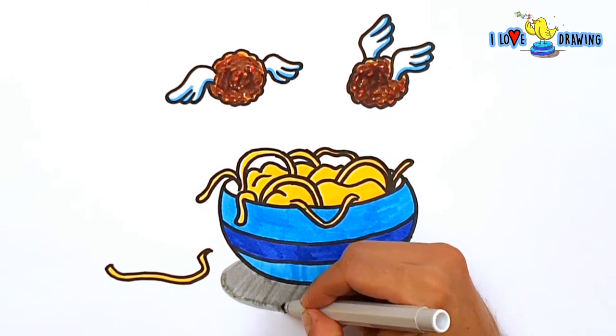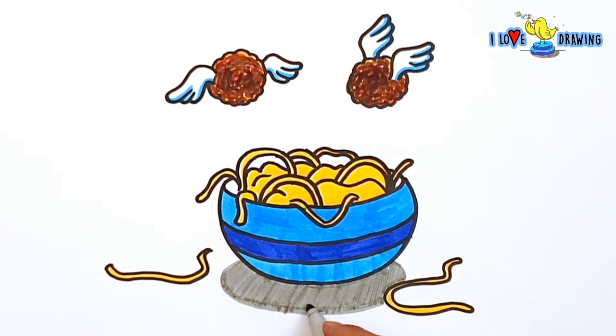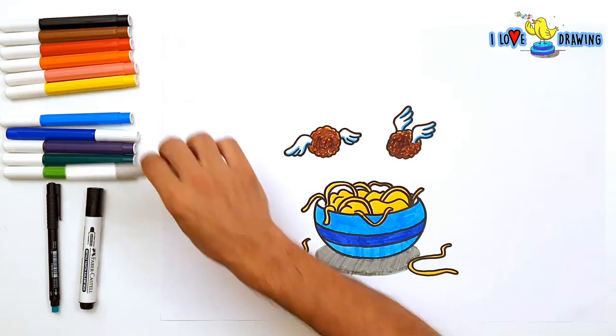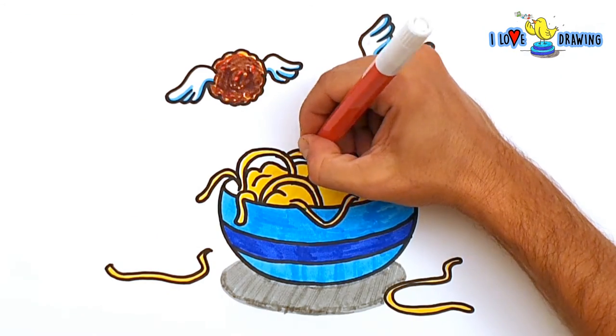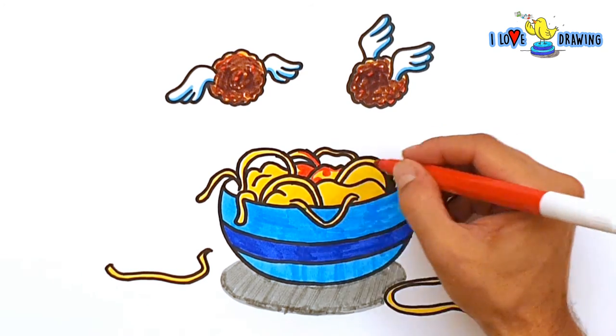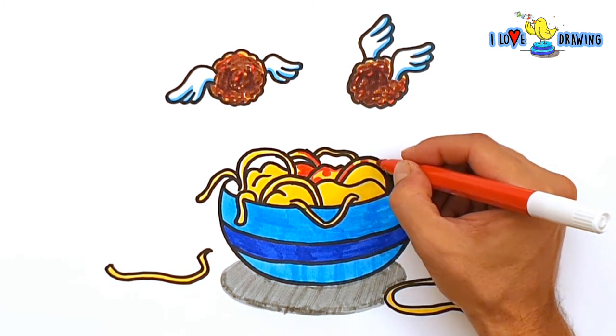So Tuche grabbed the tomato sauce that she loves. Of course, we don't have tomato sauce, so we are going to paint with red to add tomato sauce to our spaghetti in our drawing.